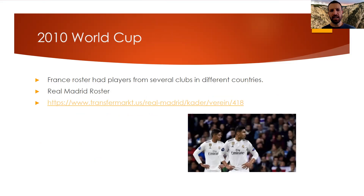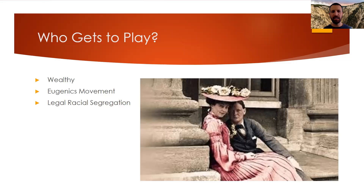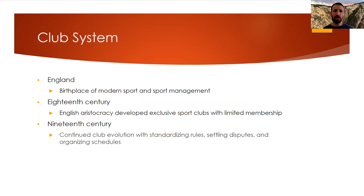The 2010 World Cup is just one example. If you look at any team such as Real Madrid or teams in the English Premier League, look at their roster — it's very much a compilation of people from different countries. Now, in early sport management, who gets to play? Really, it's the wealthy. There was racial segregation and a eugenics movement.